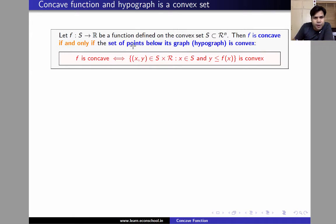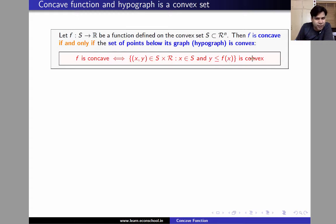So, f is concave if and only if the set of points {(x, y) in S × ℝ} such that x is in S — the domain — and y such that y is less than or equal to f(x), is a convex set.